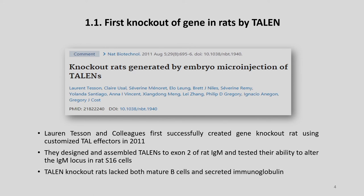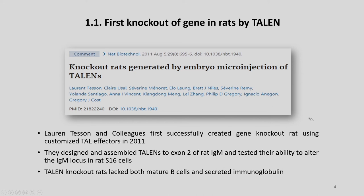The first knockout of a gene in rats was done by TALEN by Tesson et al. in 2011. Tesson and his colleagues first successfully created a gene knockout rat using customized TALE effectors. They designed and assembled TALENs to exon 2 of rat IgM and tested their ability to alter the IgM locus in rat S16 cell lines. TALEN knockout rats lacked both mature B cells and secreted immunoglobulin.